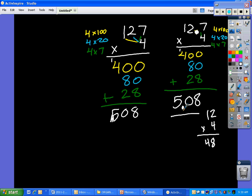If I put it here, it's 5 and 8 hundredths. That's not close to 48. If I put it here, that's 50 and 8 tenths, which is very close to 48. Therefore, the answer, 12 and 7 tenths multiplied by 4 equals 50 and 8 tenths.